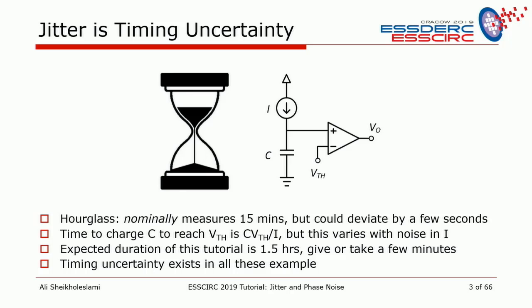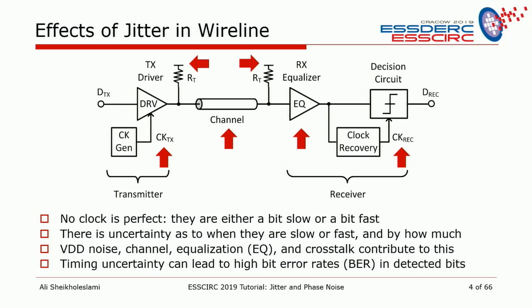I want to bring one example of the effect of jitter in wireline. I'm showing a block diagram of a transmitter and receiver separated by a channel — a piece of wire. What we're trying to do is take the data, clock it, and send it through the channel. There's a termination resistor RT to minimize reflections. The channel attenuates the signal with frequency-dependent attenuation. I've shown red arrows at the places where jitter is going to affect the performance of this wireline transceiver.